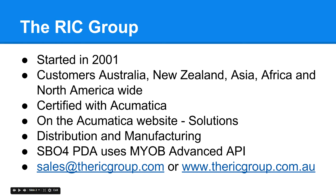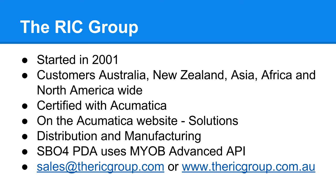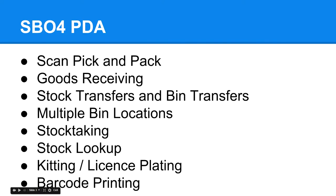The majority of our customers are in the distribution and manufacturing industries. To interface with MYB Advanced we use the API or SDK, which is known as a Software Development Kit. To contact us at the RIC Group you can email us at sales@therickgroup.com or visit our website therickgroup.com.au. The features of SBA for PDA include scan pick and pack with EDI compliance, goods receiving, stock transfers, and bin transfers — completely interfaced with MYB Advanced.